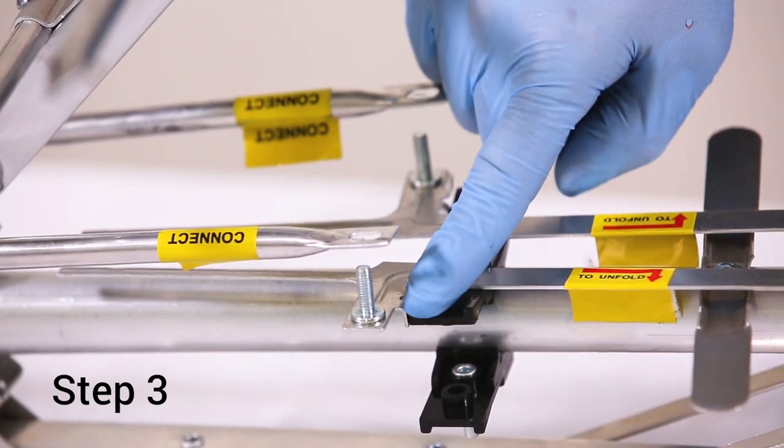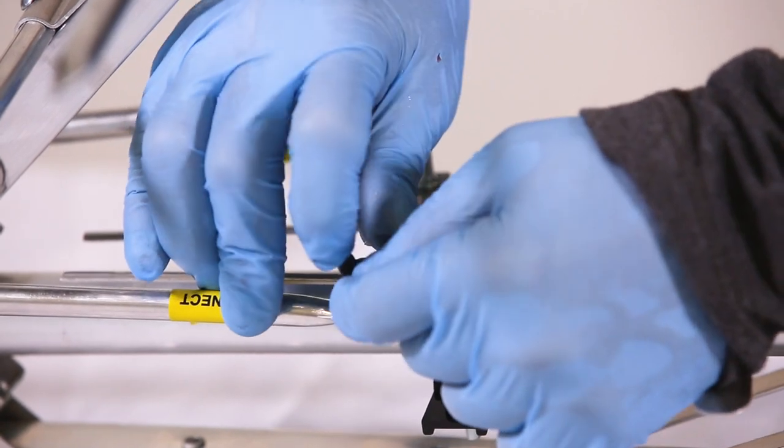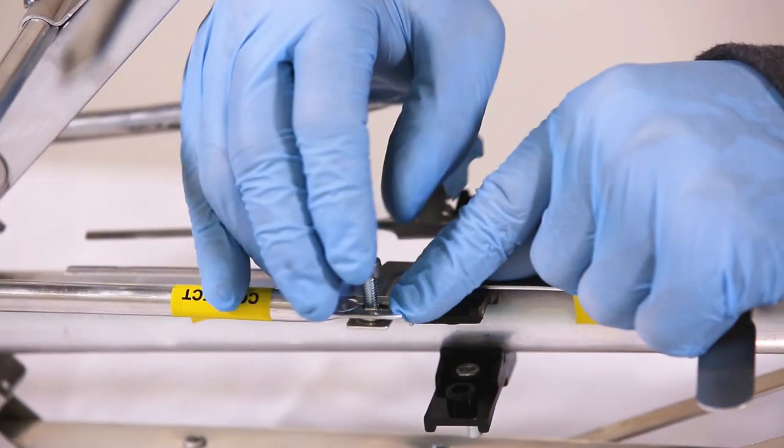Step 3: Swing the phasing rods that are riveted to the middle section into position on the front section and secure with wing nuts as shown.